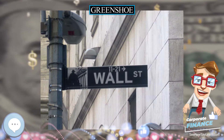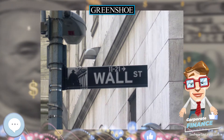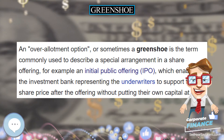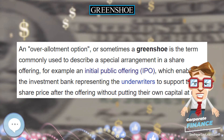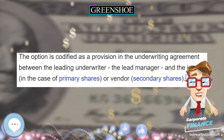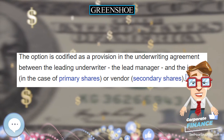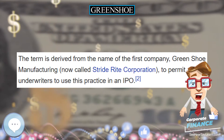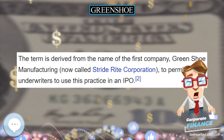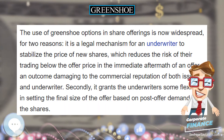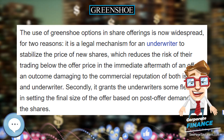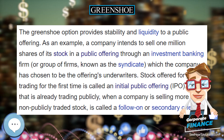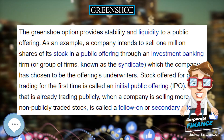In this example, that means 1.15 million shares. When the offering is priced and those 1.15 million shares become eligible for public trading, the underwriters are able to support and stabilize the offering price — also known as the syndicate bid — by buying back the extra 15% of shares (150,000 shares in this example) in the market at or below the offer price.